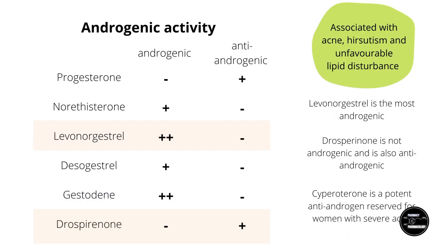Progesterone does not have any androgenic activity, and in addition is an androgen receptor blocker. A lot of the progestins are derived from testosterone, so almost all of these have androgenic activity, of which levonorgestrel is considered to be the most androgenic. Androgenic activity is associated with acne, hirsutism, and reducing HDL cholesterol. If given as a combined hormonal formulation, the estrogen component opposes these androgenic adverse effects for most people. However, there are some women who are more susceptible to these androgenic effects, for example hirsutism.